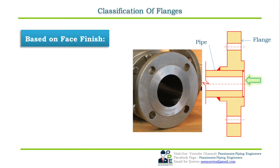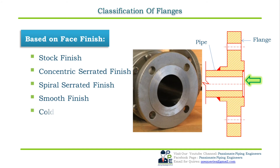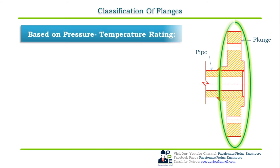Based on face finish of the flange: flange face finish ensures that the flange mates with the gasket and the companion flange perfectly, and some surface roughness is required to achieve this. Face finish applies only to raised face and flat face flanges. Common types of face finish are: stock finish, concentric serrated finish, spiral serrated finish, smooth finish, and cold water finish.